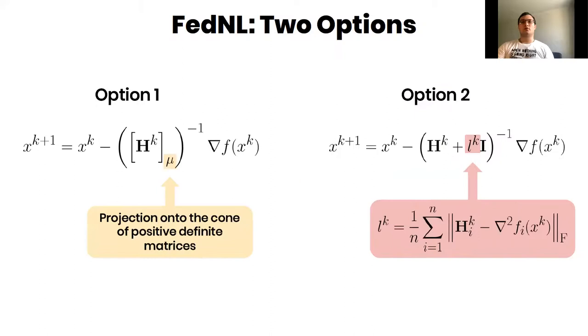We have two options in order to make the matrix H^k to be well-defined. The first one is based on projection onto the cone of positive definite matrices. The second one is based on regularization via adding identity matrix times some coefficient.